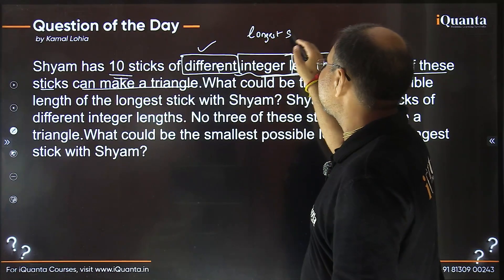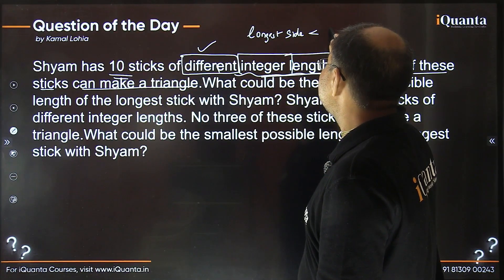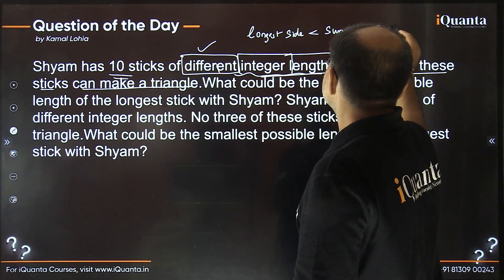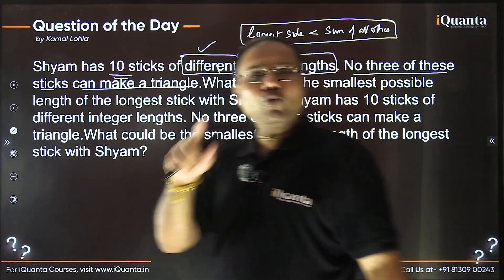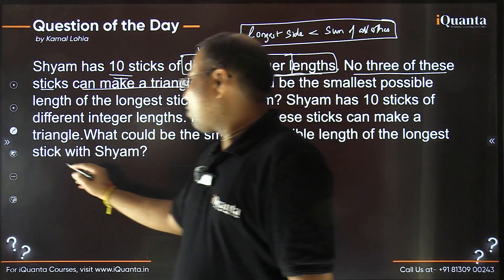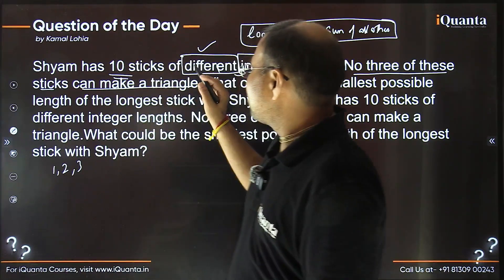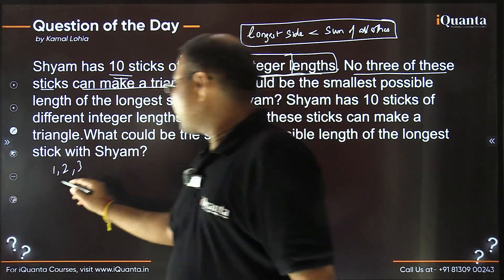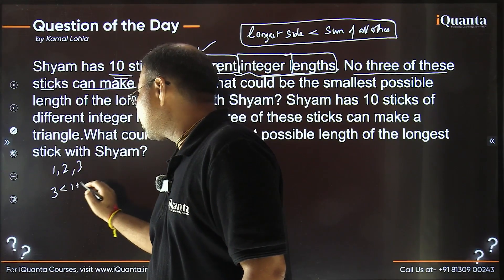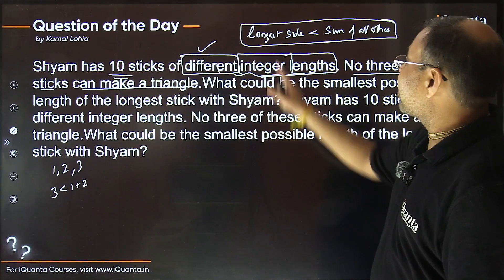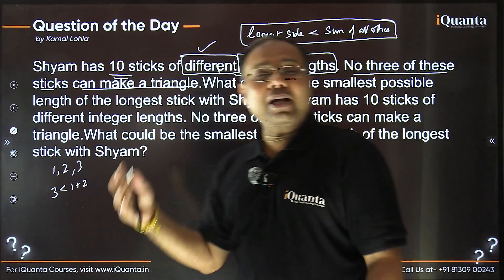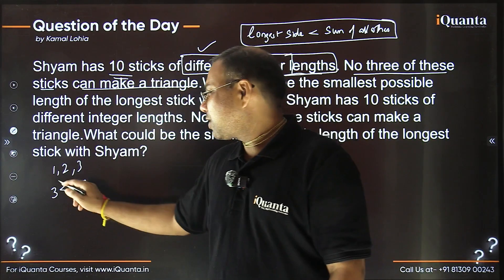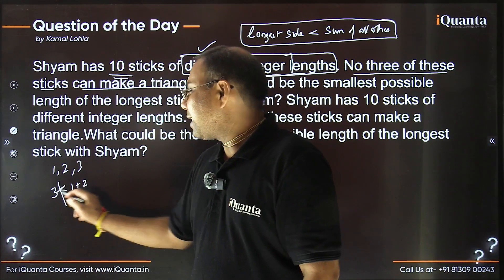The triangle inequality states that the longest side of a triangle must be smaller than the sum of all other sides. So for 1, 2, 3: the longest side is 3. Is 3 smaller than 1 + 2? No, 3 equals 1 + 2, it is not strictly smaller, so a triangle cannot be formed.